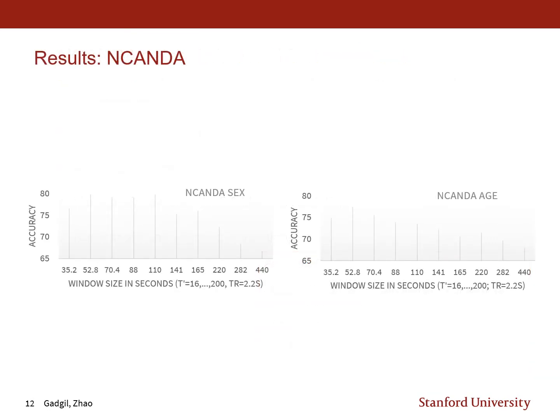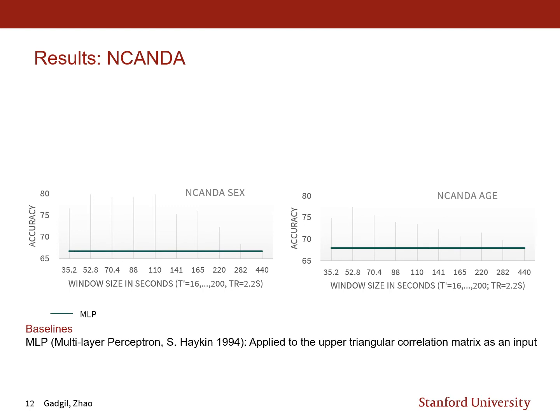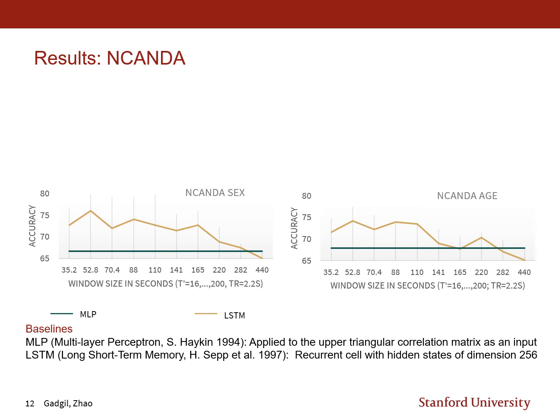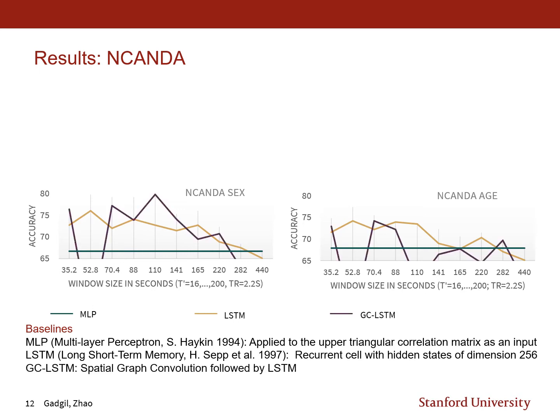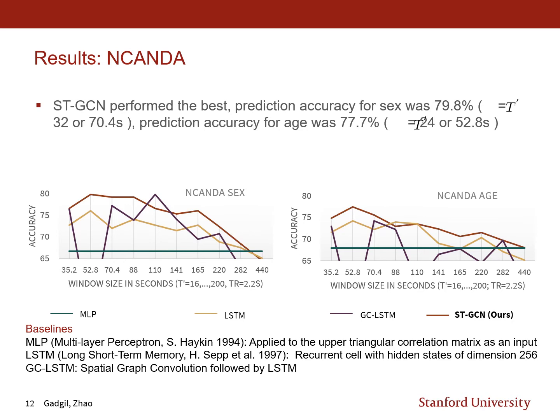Looking at the results on the NCANDA dataset, the first baseline was a multi-layer perceptron applied to the upper triangular correlation matrix, which performed worst among all methods. The second was an LSTM applied to the entire BOLD signal matrix with a 256-dimensional hidden state. The third combined spatial graph convolution with an LSTM. Our method, STGCN, performed better than all baselines: prediction accuracy for sex was 79.8% with an optimal window size T prime of 32, and for age was 77.7% with an optimal window size T prime of 24.